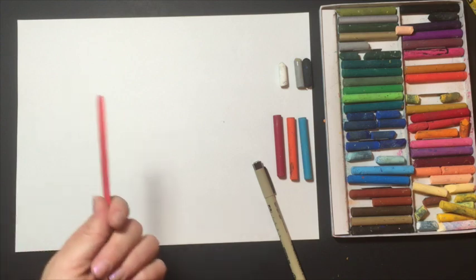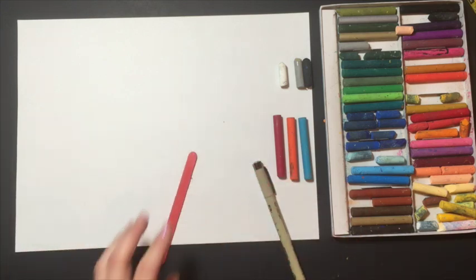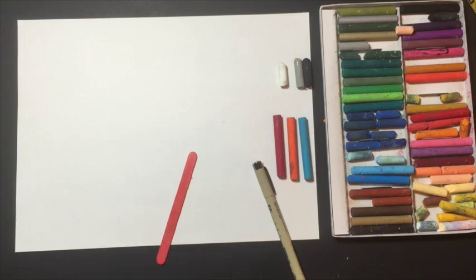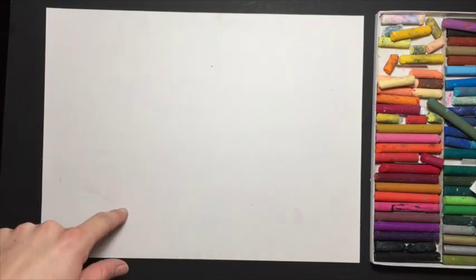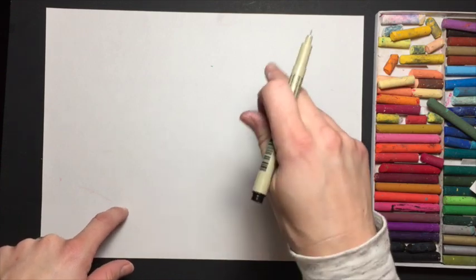Something to scratch into it. I'm just using a popsicle stick. Some people like to use palette knives. If you have one of those, that's fine. If you don't, you can use anything. We're going to be dividing our paper in half. On this side, we're drawing four rectangles. On this side, we're drawing six squares.